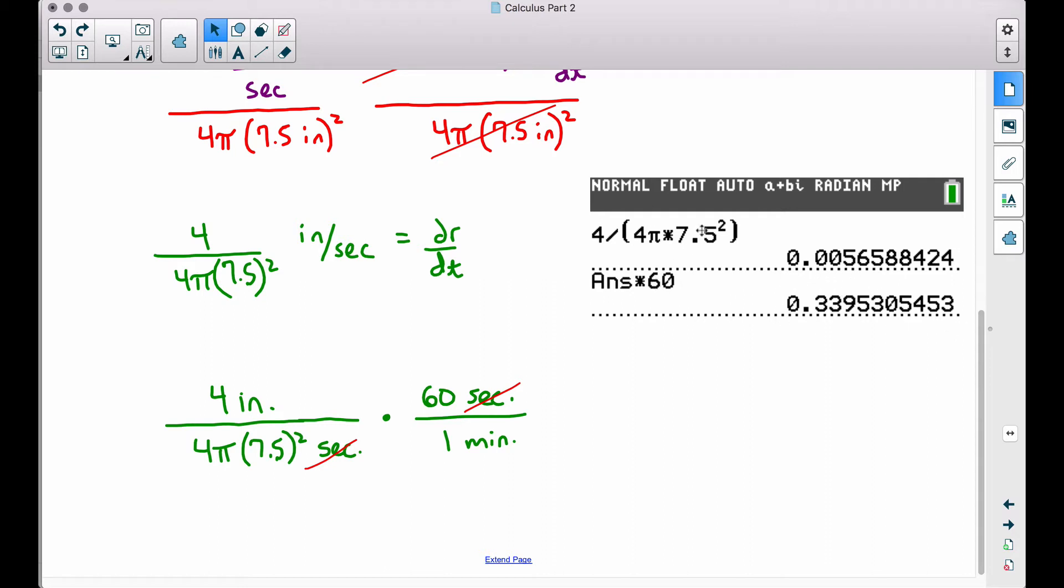And notice I haven't rounded anything in my calculation. Now we're finally ready to round. So therefore, dr/dt is approximately 0.3 inches per minute.